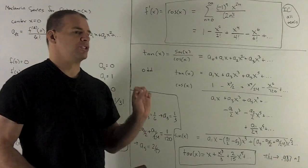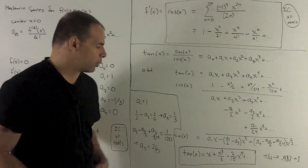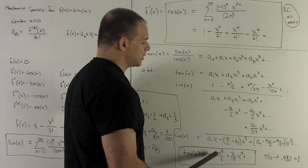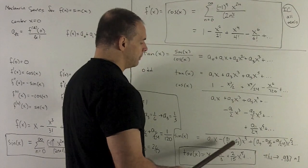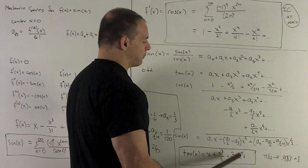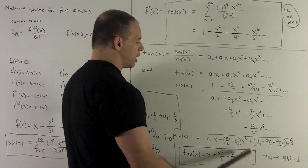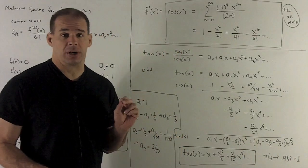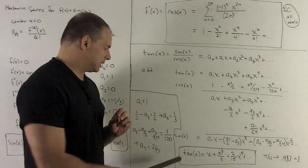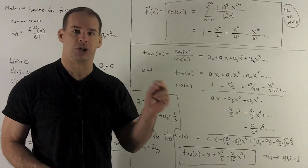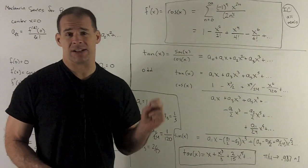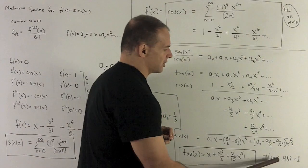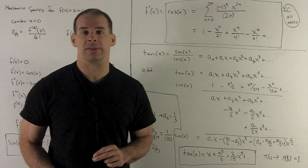Just to verify, let's plug in pi fourths: pi/4 plus (pi/4) cubed over 3 plus 2 fifteenths times (pi/4) to the 5th gives approximately 0.987. We know the exact answer is 1, since tangent of pi fourths equals sine(pi/4) over cosine(pi/4), and both equal root 2 over 2. Three terms gets us in the ballpark, so we know we probably did this right.